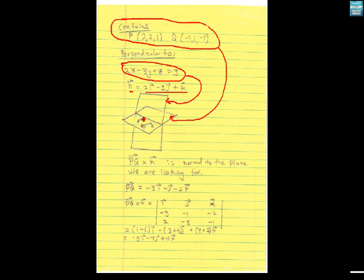Since the vector n is normal to this other plane, and the two planes are perpendicular, the normal n can be arranged so as to be contained in this plane.